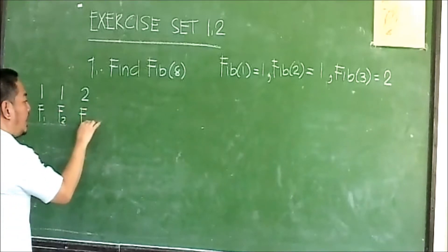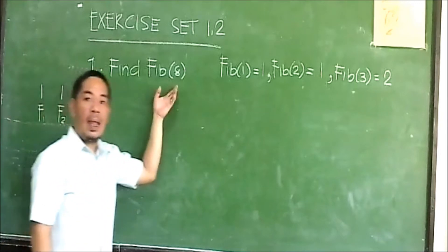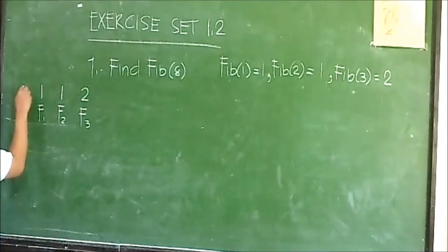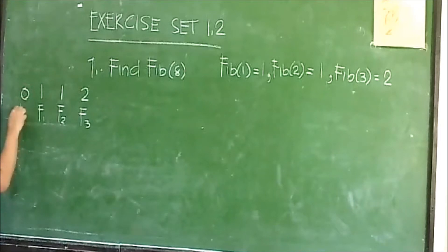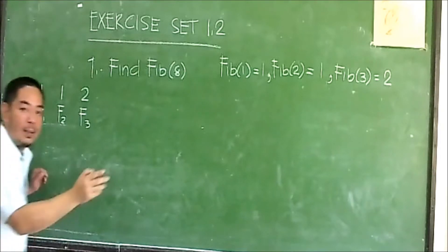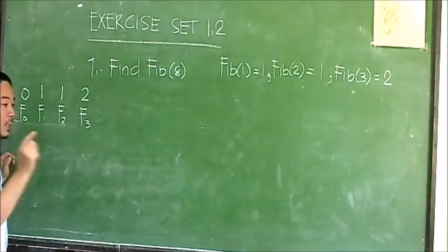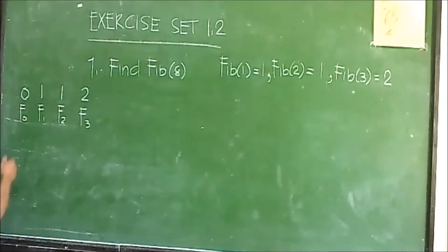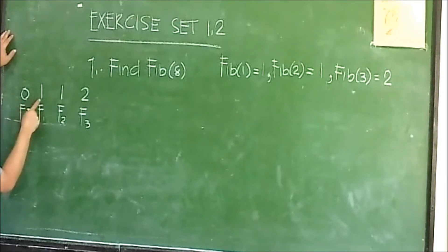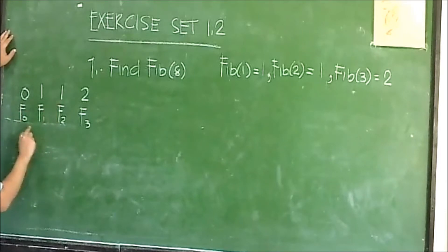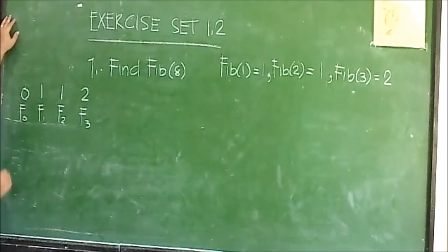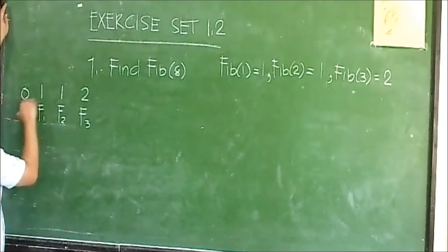We are going to solve for the eighth term. Let's list the given: the first term is one, the second term is one, the third term is two, and so on. Let's analyze the given sequence of numbers, check and analyze the patterns, and give a mathematical equation about the patterns.